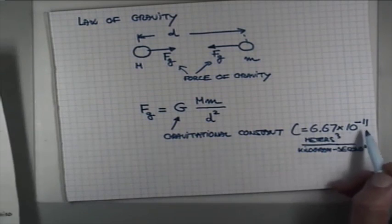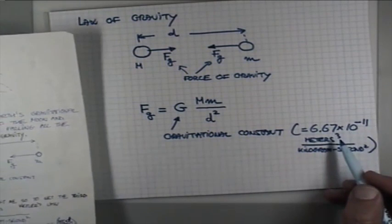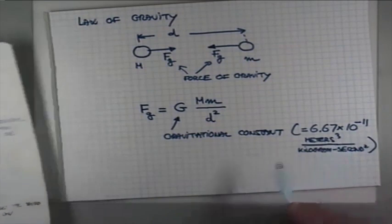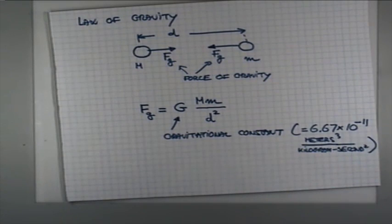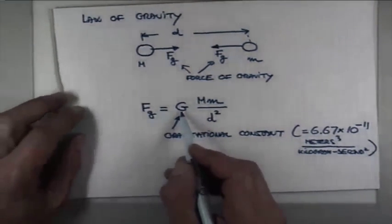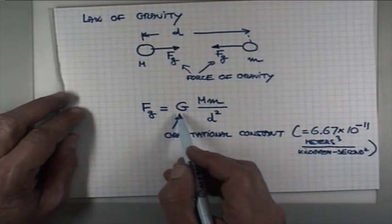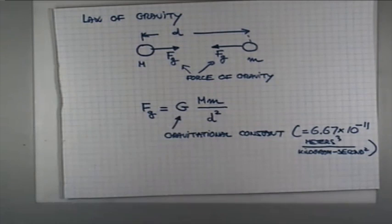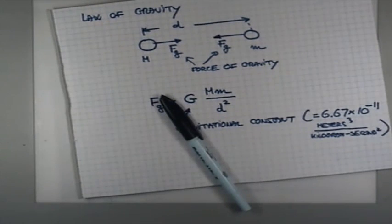Now note that it is proportional to very large negative power of 10, 10 to the minus 11. That means that the force of gravity is actually quite weak. And that's the reason why you and the person sitting next to you are not glued together by the force of gravitational attraction between the two of you. You might be attracted for different reasons to each other, but it's not the force of gravity.